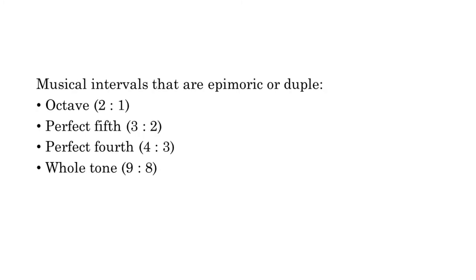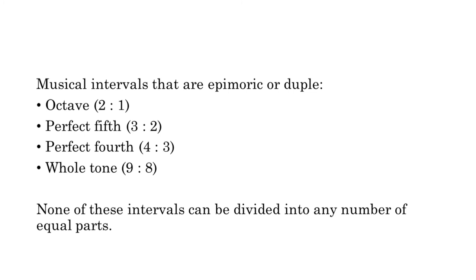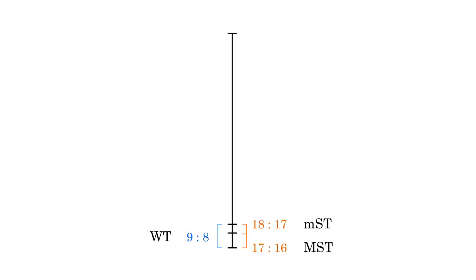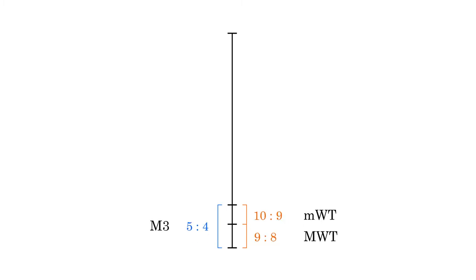Musical intervals represented by epimoric or duple proportions include the octave, perfect fifth, perfect fourth, and whole tone. None of these intervals can be rationally divided into halves, thirds, quarters, or any other number of equal parts. If we want to divide these intervals rationally into two parts, the two parts will have to be unequal. This is why the whole tone is traditionally divided into two semitones of different sizes. If you stop a string as indicated on this diagram and pluck the longer portion, you'll get two differently sized semitones. That's right — there's a major semitone and a minor semitone, and the familiar equal-tempered semitone is an irrational modern invention.